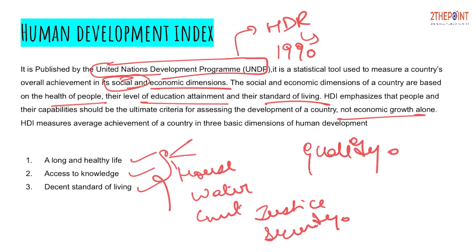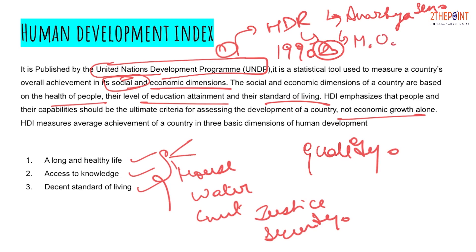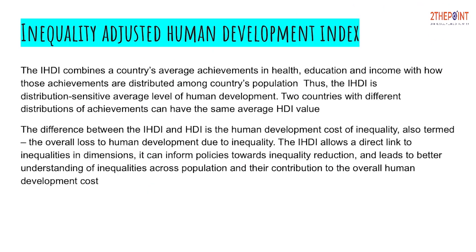What you need to learn is: who publishes the index, when was it first published, and by whom it was developed. A very famous Nobel laureate from our country also helped in developing it — Amartya Sen, an economist from India. A very famous economist from Pakistan, Mehboob ul Haq, also helped Amartya Sen in developing this index. Together they developed it, which forms part of the HDR report published by UNDP.